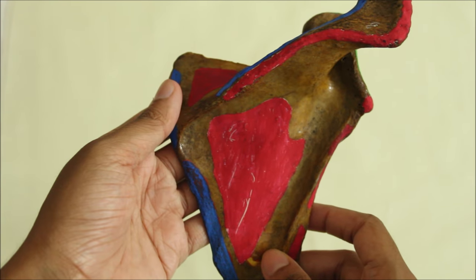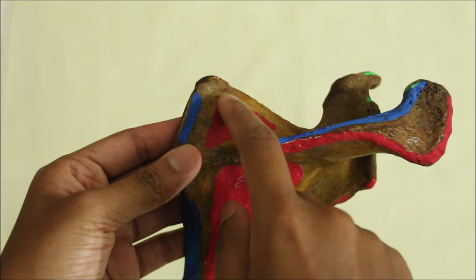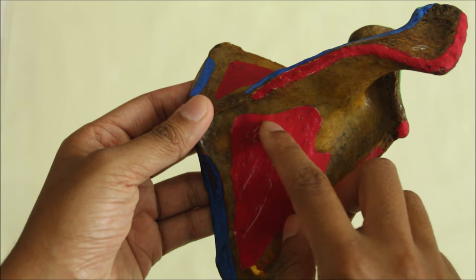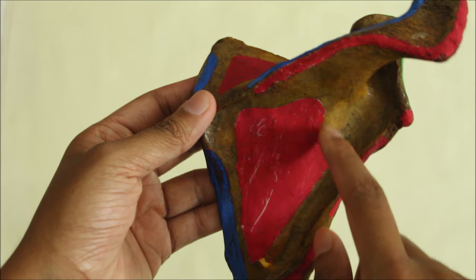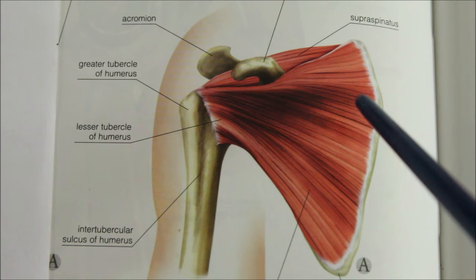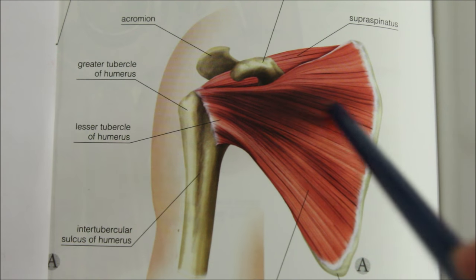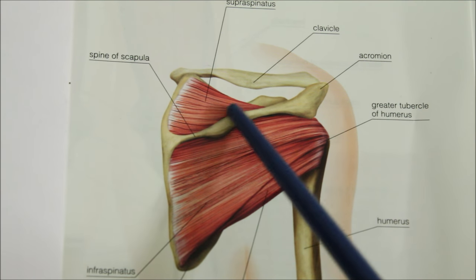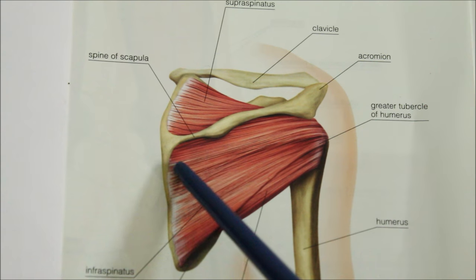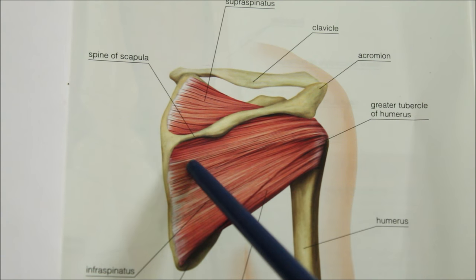Looking at the dorsal surface of the scapula, the supraspinous fossa gives origin to the supraspinatus muscle from its medial two-thirds. The infraspinous fossa gives origin to the infraspinatus from its medial two-thirds. The subscapularis muscle originates from the medial two-thirds of the costal surface in the subscapular fossa.